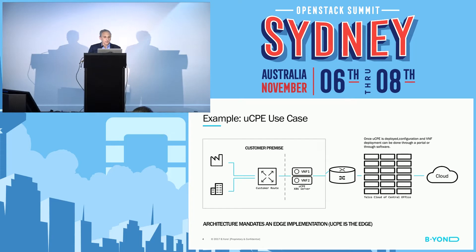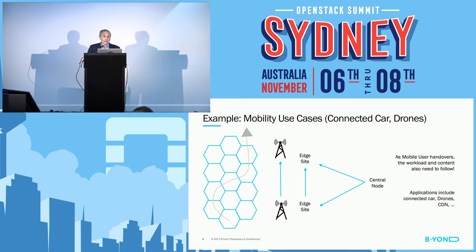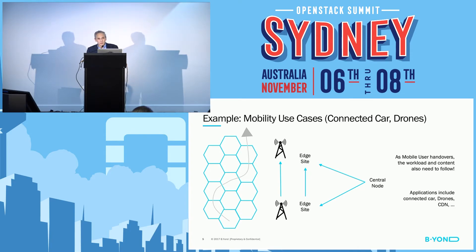The second use case is completely different — it's a mobile use case, the kind people talk about with mobile edge computing. Think of a mobile handset streaming a video from a central node as you're riding in a cab. You'd want to cache that video close to where it's consumed, close to the cell tower, in an edge node. As you move around, you hand over from one cell to the next. The mobile network manages that handover well, minimizing disruptions and keeping the same IP address.